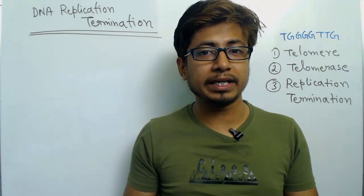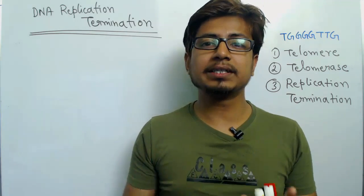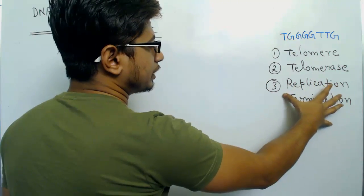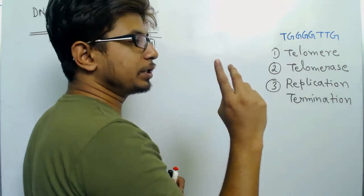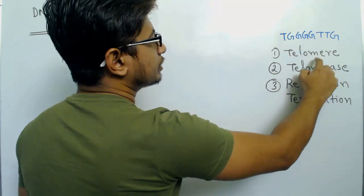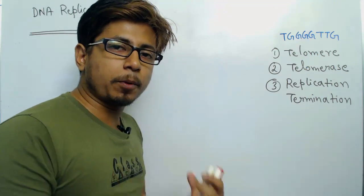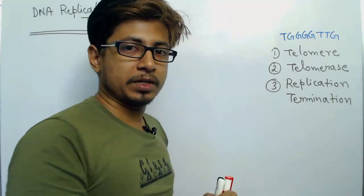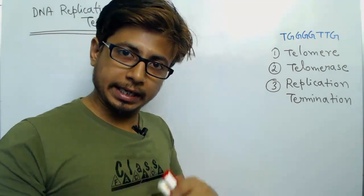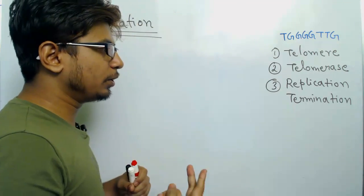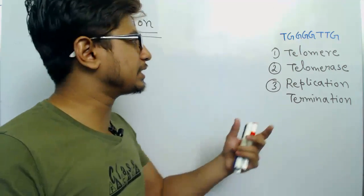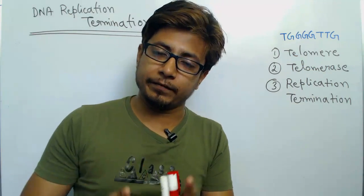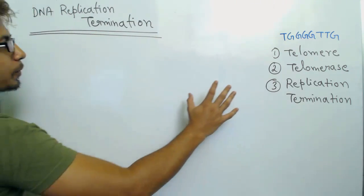In this video lecture we are going to learn how the termination of DNA replication occurs in the case of eukaryotic linear DNA. To understand that we need to know three separate things: the detailed structure of the telomere, the responsible enzyme telomerase, and the replication termination process itself. This video will also be helpful to understand the mechanism of telomerase and how telomerase protects the telomere from being clipped.